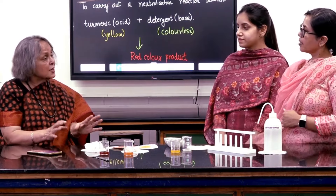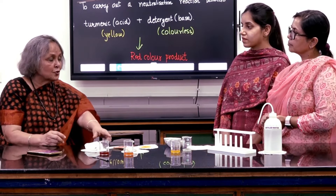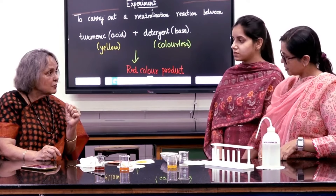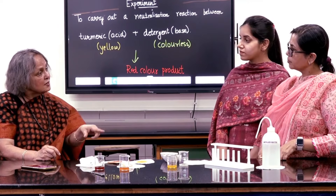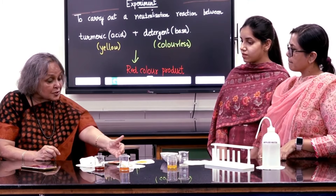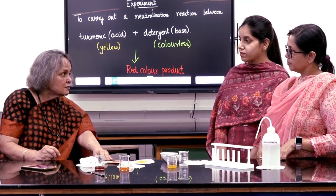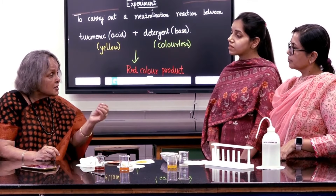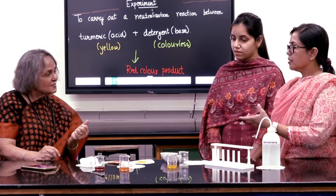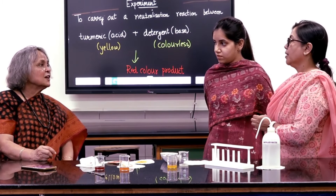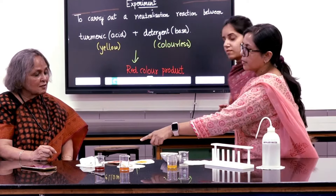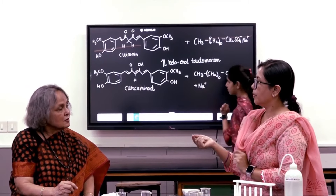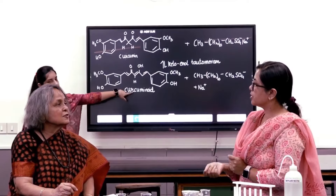So I wonder what chemical reaction is actually taking place. You know the formula for curcumin, and on that we have the basic formula for detergent. Is there a chemical action that happens there? Actually there are isomers — the ketone and enol form. The ketone form and the enol form both exist in equilibrium with each other, as a reversible reaction.